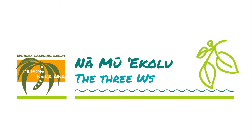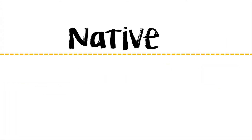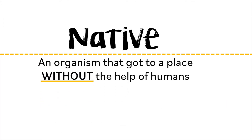Aloha mai! Today we're going to talk about na mu'i kolu, or our three W's. These are three ways our native species got to Hawai'i. But first, let's look at the term 'native.' You may have heard this term before, but for today's purposes we're going to use this definition: a native is an organism that got to a place without the help of humans. This means that these plants and animals arrived to Hawai'i all on their own — they were Hawai'i's first kama'āina.